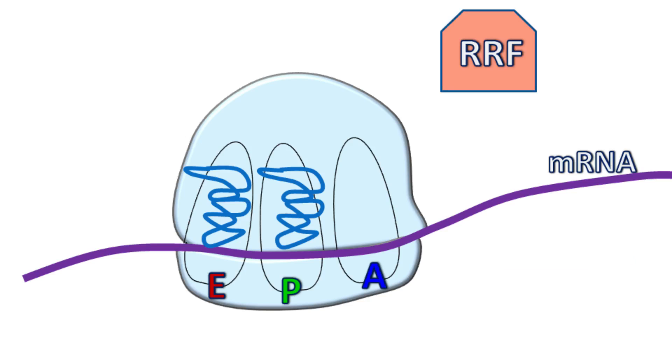Once the polypeptide chain and RF3 gets disassociated, RRF binds at the A site.